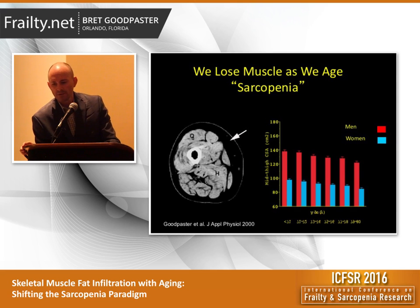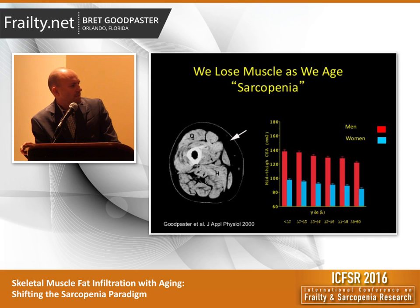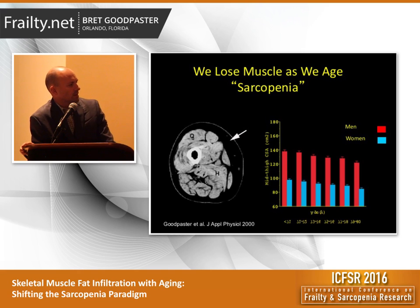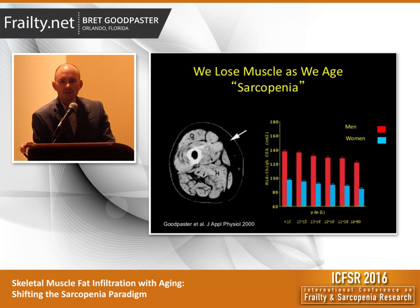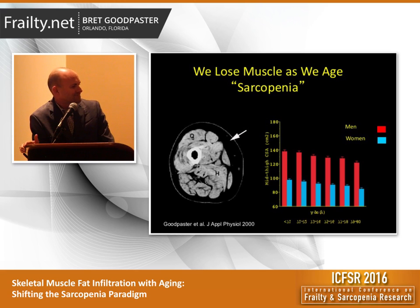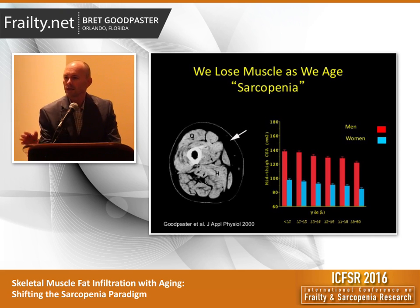At the same time, working with Ann Newman, Steve Kruszewski, Tammy Harris, and others from the Health ABC study — this was in the late 90s when Health ABC started — we quantified muscle cross-sectional area on CT and confirmed, as others had done in cross-sectional studies, that for both men and women there was an age-related decrease in muscle mass. For both men in red and women in blue, there's a progressive decline. This is cross-sectional data in muscle cross-sectional area, sort of defining classic sarcopenia.